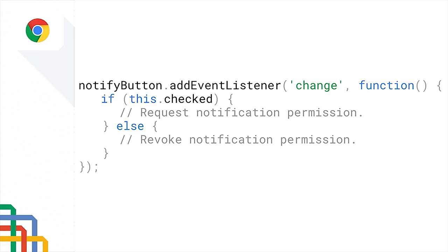The way I do this is by adding an event listener to detect when the toggle state has changed — if the toggle is switched on, then I request notifications, and when a user toggles it back off, I revoke.